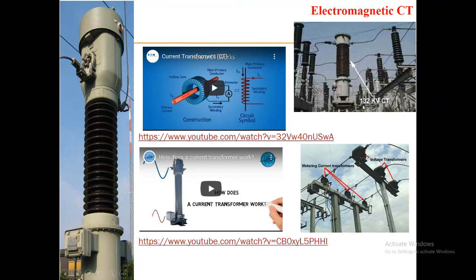When you are visiting any switchyards, you can see three CTs for different phases. It is a single phase device, so at each phase there is one single CT connected. Here I have shown you the CT for 132 kV and the metering CTs are positioned below.